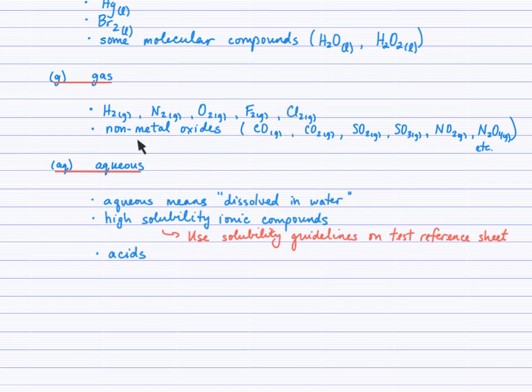Non-metal oxides, these compounds will show up as reactants and products in different reactions. Non-metal oxides are typically gases. So, carbon monoxide, carbon dioxide, sulfur dioxide, sulfur trioxide, nitrogen dioxide, dinitrogen tetroxide. Anytime you have a non-metal with oxygen, expect that compound to be a gas. So, G is the subscript.